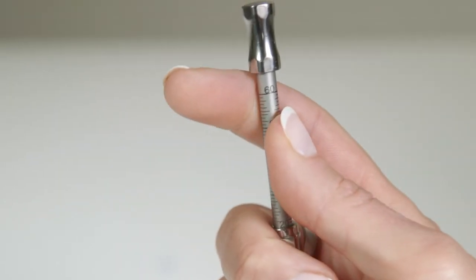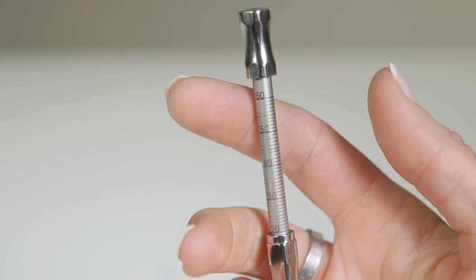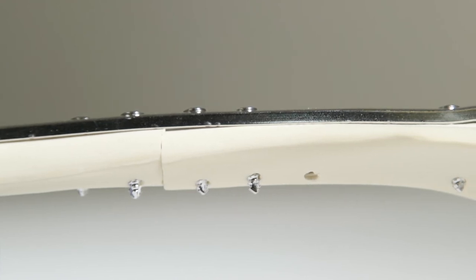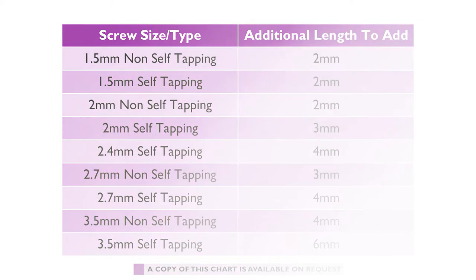The reading on the scale gives the actual depth of the pilot hole, cortex to cortex. The surgeon must then add a few millimetres to this measurement to take account of the depth of the screw head and that the tip of the screw must protrude from the far cortex. There are standard guidelines as to how many millimetres should be added to the measurement for different sizes of implants.